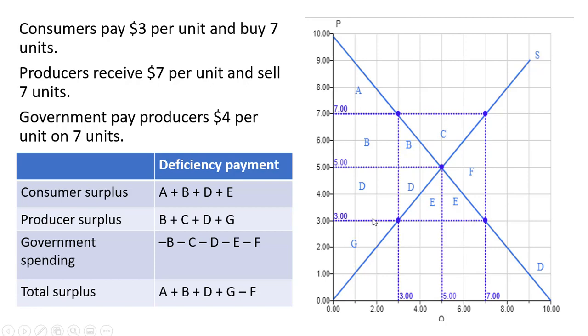And now for government spending. The government is paying producers $4 per unit on 7 units, so that's technically $28. And it's going to be represented by this rectangle. Okay, this rectangle is a 4 by 7 rectangle. And that is the amount of expenditures that the government incurs because of this program. So that's letters B, C, D, E, and F. And I have minus signs because this is an outflow. Okay, when we're having a tax in the market, the government is taking money in, so we count that as a positive inflow. This is an outflow, so we've got minus signs here.